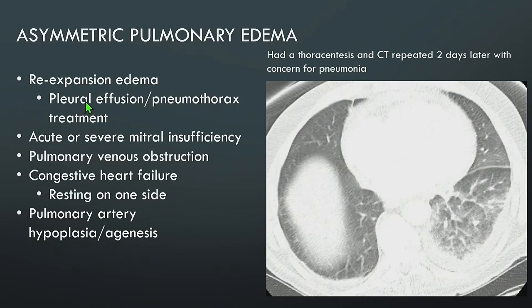Other causes of asymmetric edema include acute or severe mitral insufficiency — generally involving the right upper lobe because the jet is directed upward — pulmonary venous obstruction, heart failure patients resting on one side, and in rare cases of congenital heart disease such as pulmonary artery hypoplasia or agenesis.